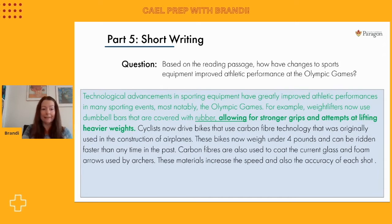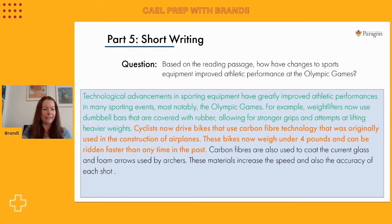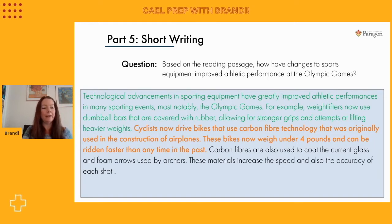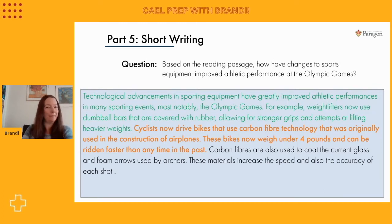Let's move on to our second example — this one is all about bicycles and how they've improved for cyclists at the Olympics. I'll read the two sentences together: cyclists now drive bikes that use carbon fiber technology that was originally used in the construction of airplanes. These bikes now weigh under four pounds and can be ridden faster than any time in the past. The ideas are great — we know how the bikes have been improved and how that has improved athletes' performances. But I did notice a repetition.